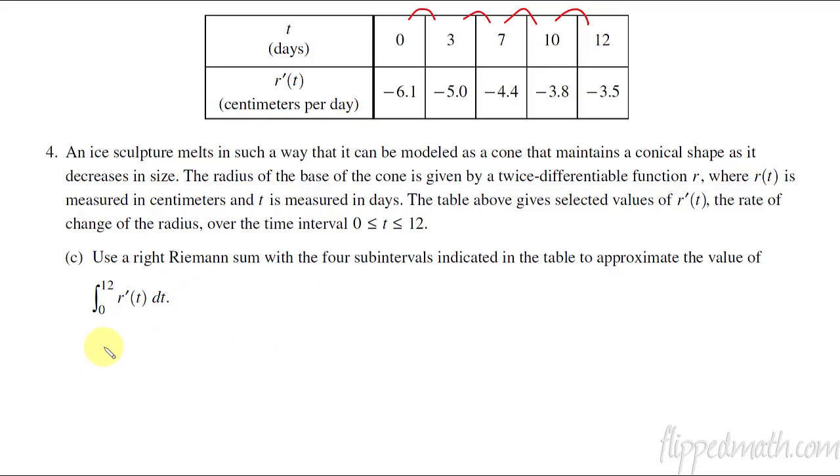This is approximately width times height. You have to show the width times the height. So the width of this first interval is 3 days. I'm multiplying it, since it's a right Riemann sum, by the right side of the interval which has a height of negative 5. I'm looking at each of the rectangles and adding them up. The next one, I multiply by the height on the right side which is negative 4.4, and you continue on.